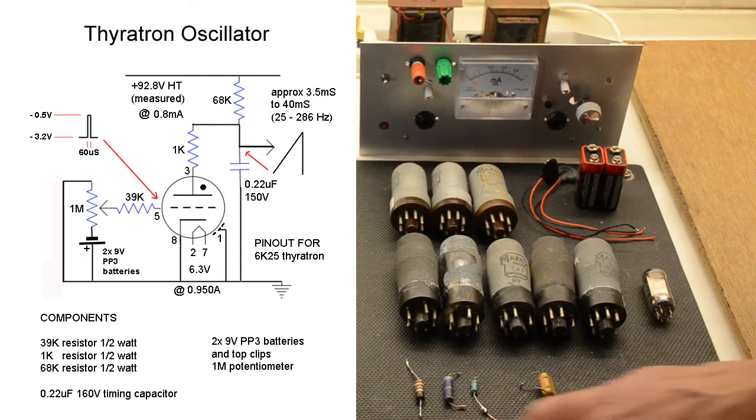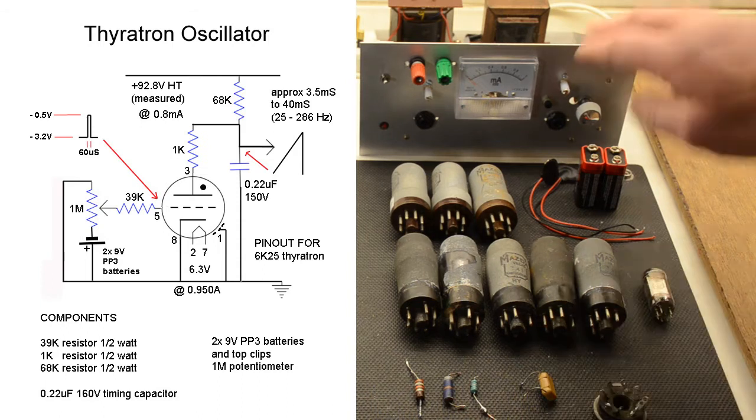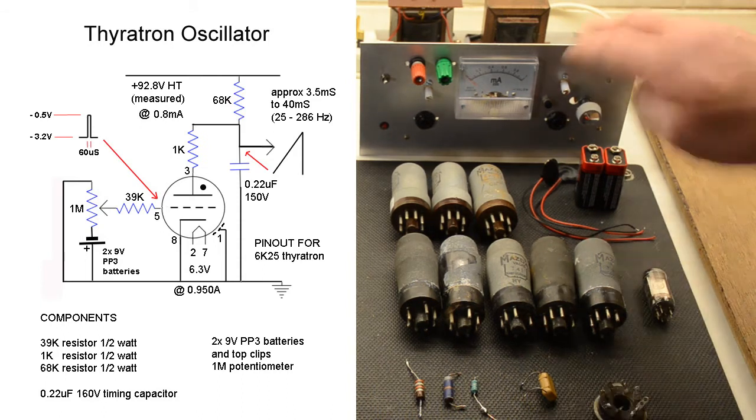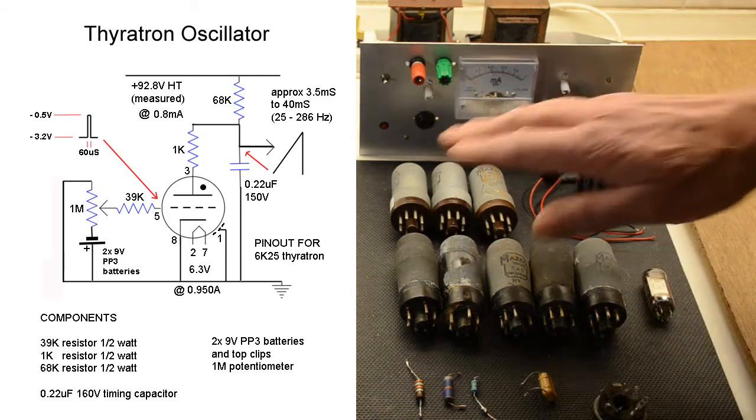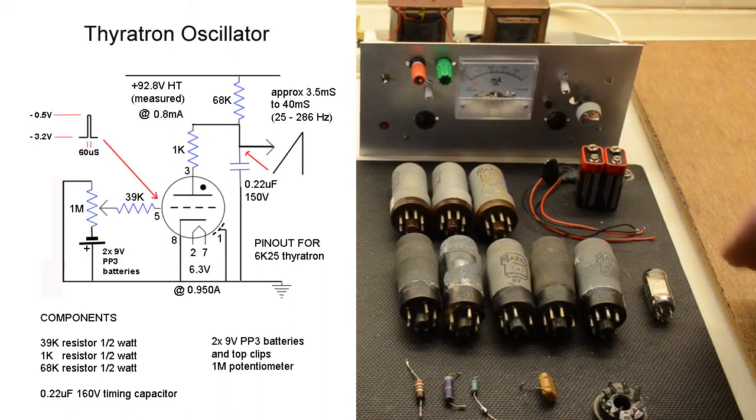Now there's only four components in addition to what's on the universal chassis: three resistors and a timing capacitor. The Thyratrons we have here, there's some examples you can see, there are actually three different sorts.